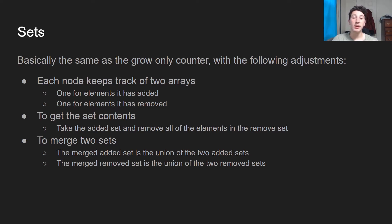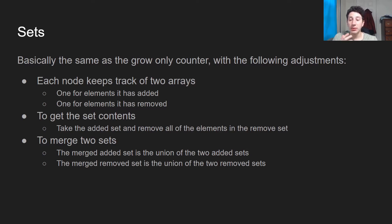Moving on to sets — it's basically the same as the grow-only counter with the following adjustments. Instead of an increments and decrements list, we now keep track of two arrays: one for elements added and one for elements removed. To get the set contents, we take all elements in the added list and just don't count any element that also appears in the removed set. As far as merging goes, we take the union of two added sets and the union of two removed sets. The merge function is commutative and idempotent because the union of a set is obviously idempotent.